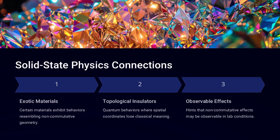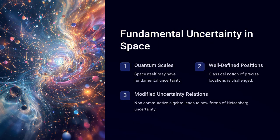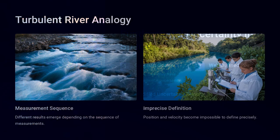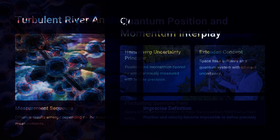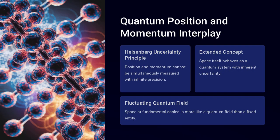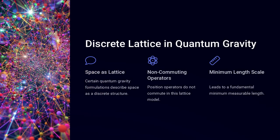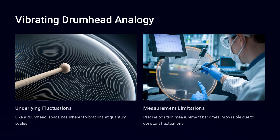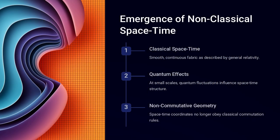What happens when space itself no longer behaves like a smooth, continuous fabric? In non-commutative geometry, the coordinates of space are not independent numbers, but rather operators that do not commute, just like position and momentum in quantum mechanics. This means that measuring one coordinate can disturb another, leading to uncertainty-like effects in space itself.